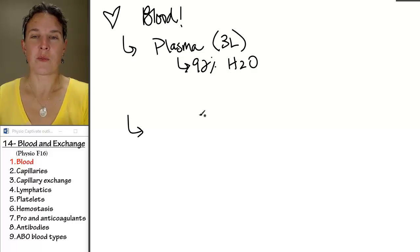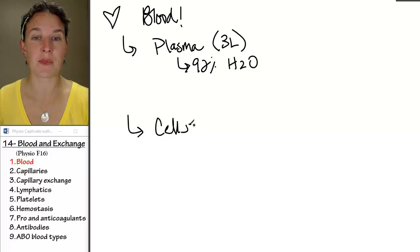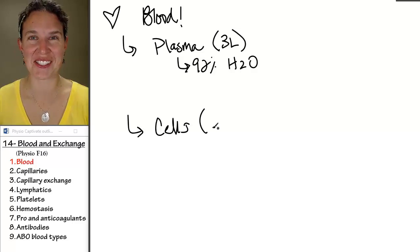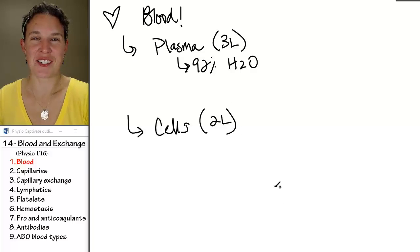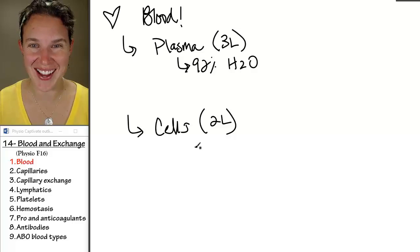The other two liters are cells. So a 160-kilogram dude has five liters of blood. Yeah, or 160-kilometer dude - he probably has five liters of blood too.